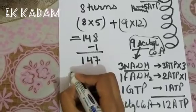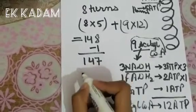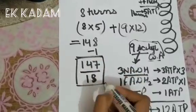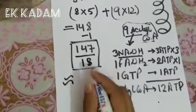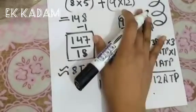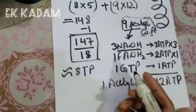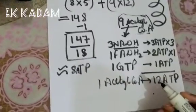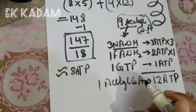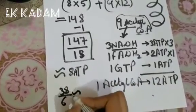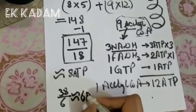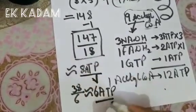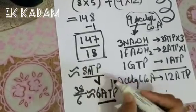Since we utilized 1 ATP in the initiation of the process, the net total is 148 − 1 = 147 ATP. For an 18-carbon molecule like stearic acid, per-carbon energy production is 147 ÷ 18, which is approximately 8 ATP per carbon. In comparison, glucose produces 38 ATP from a 6-carbon molecule, giving approximately 6 ATP per carbon. This shows that fat produces more energy per carbon than carbohydrates.